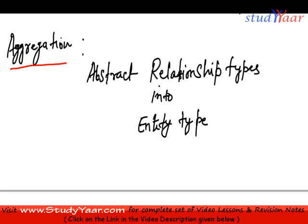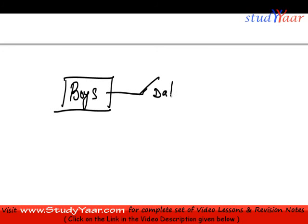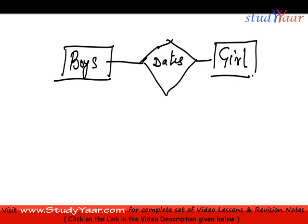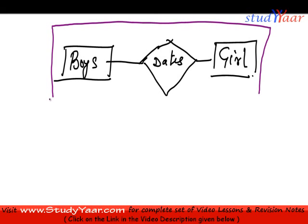Let's see what we mean by this. Let's suppose we have a relationship where a boy dates a girl, and while dating they meet at various places. Now I have to show a relationship that a boy is meeting a girl at a specific place. In order to do that, I abstract this relationship into an aggregation, so that it can behave like an entity type.